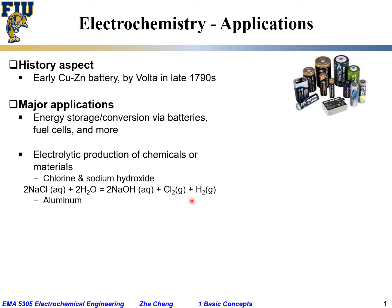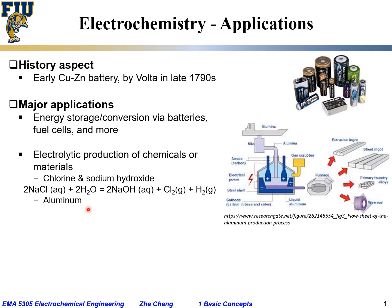Electrochemistry is also the foundation for electrolytic production of very important metals such as aluminum. Here we give a schematic for electrolytic production of aluminum. Because it's electrochemistry-based, we would have so-called electrodes — anode, where oxidation happens, and cathode, where reduction is happening. Because reduction is happening, the cathode is negatively charged while the anode is positively charged. Electrons flow from the cathode into the material, and the product would be liquid aluminum.